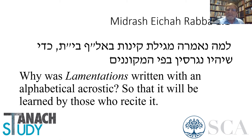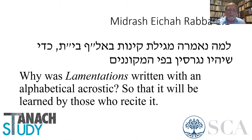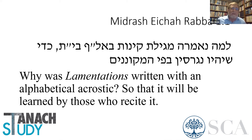However, this explanation does not really explain the acrostic feature in Megilat Echa. First, if that's the reason, then why would chapter 3 be a triple acrostic? We have one acrostic in chapters 1, 2, and 4 — why a different form in chapter 3? And even more severe is chapter 5, which is also recited as a kinah and has 22 verses. What happens with the acrostic form that does not appear there? This explanation does not give reason to the variations of the acrostic form in Echa.